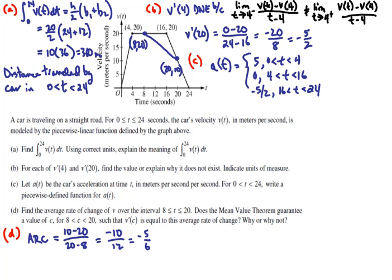Next, we're asked to determine whether the mean value theorem guarantees a value of c between 8 and 20, such that v'(c) is equal to this average rate of change. We say that the mean value theorem does not apply because v(t) is not differentiable for all t between 8 and 20, which is a requirement of the mean value theorem.